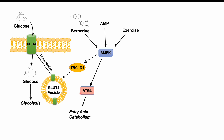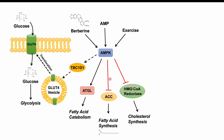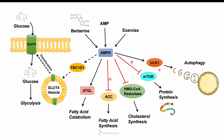AMPK activation also leads to activation of ATGL, or adipose triglyceride lipase, an enzyme involved in fatty acid catabolism — the breakdown of fatty acids. AMPK can also inhibit ACC, or acetyl-CoA carboxylase, an enzyme used for making fatty acids, thereby suppressing new fatty acid formation. AMPK activation can also inhibit HMG-CoA reductase, the important enzyme involved in cholesterol synthesis. It also inhibits mTOR, which is involved in protein synthesis, activates ULK1, which is involved in autophagy, and can inhibit gluconeogenesis in the liver — the formation of glucose from non-glucose substrates — helping to reduce fasting blood glucose levels.